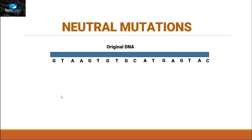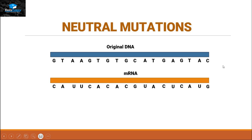Let's take an original piece of DNA. For example, here is a DNA strand with nitrogenous bases. It will make messenger RNA from it, and all the nitrogenous bases will be complementary — guanine will make cytosine, thymine will make adenine, and adenine will make uracil, because in RNA uracil is present instead of thymine.